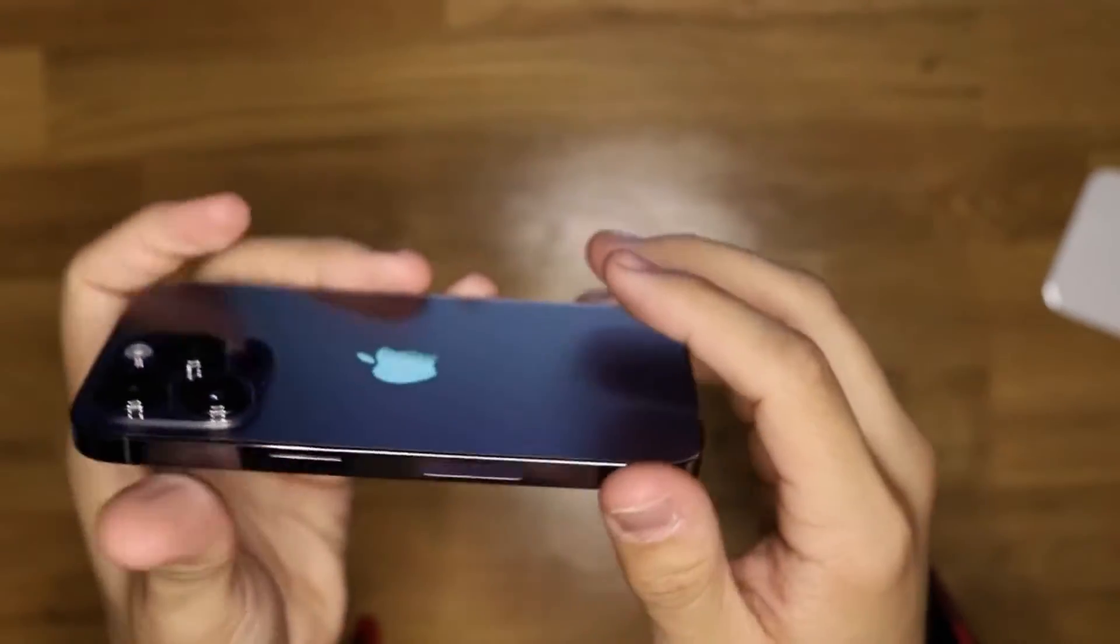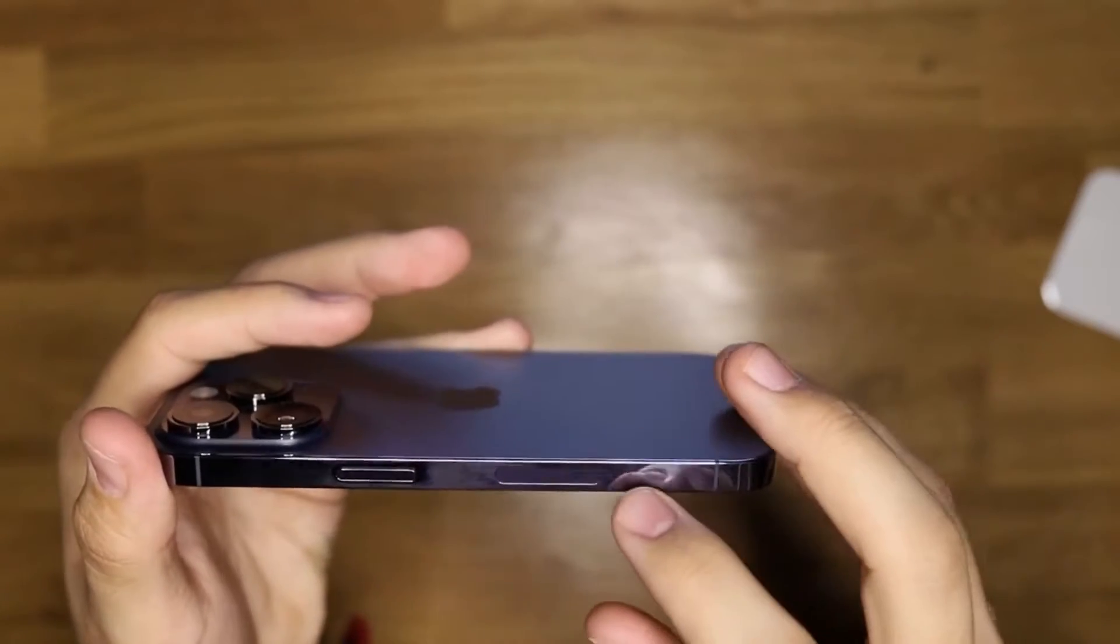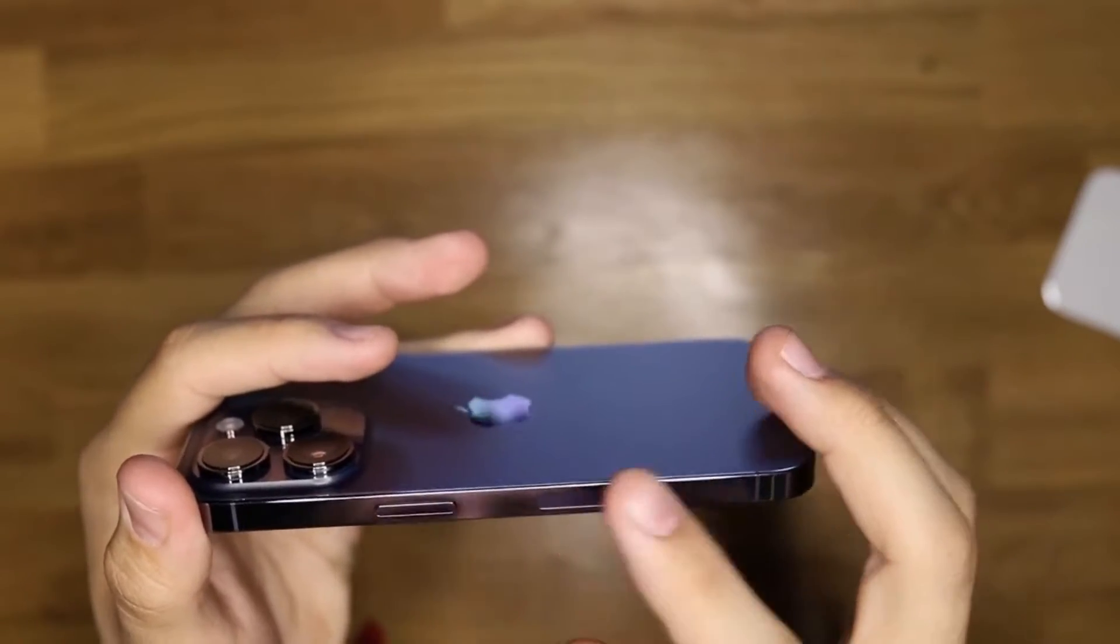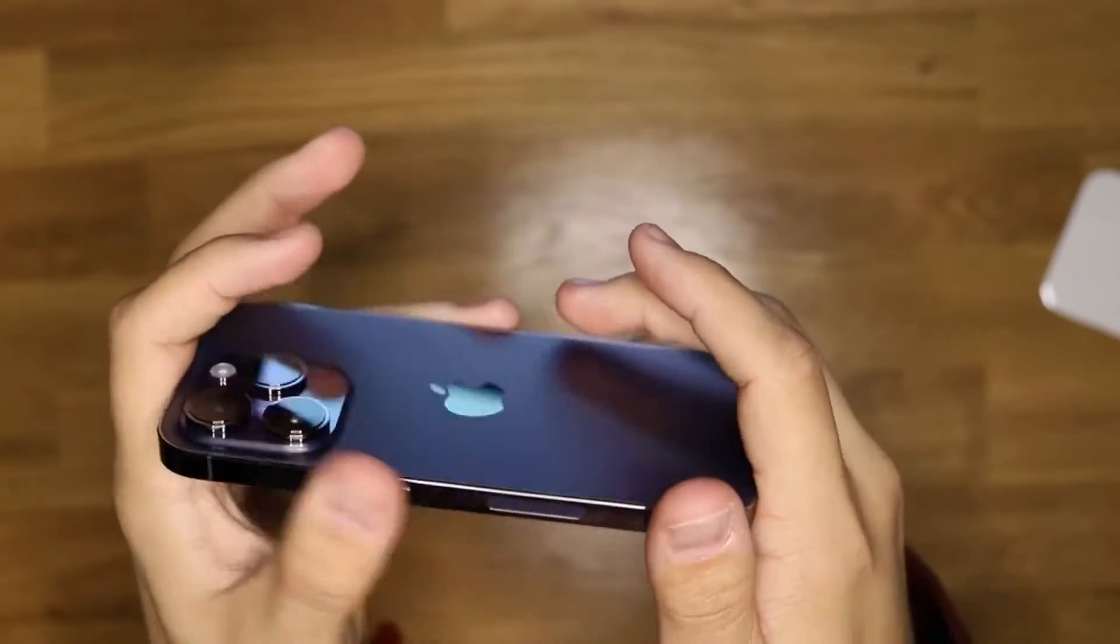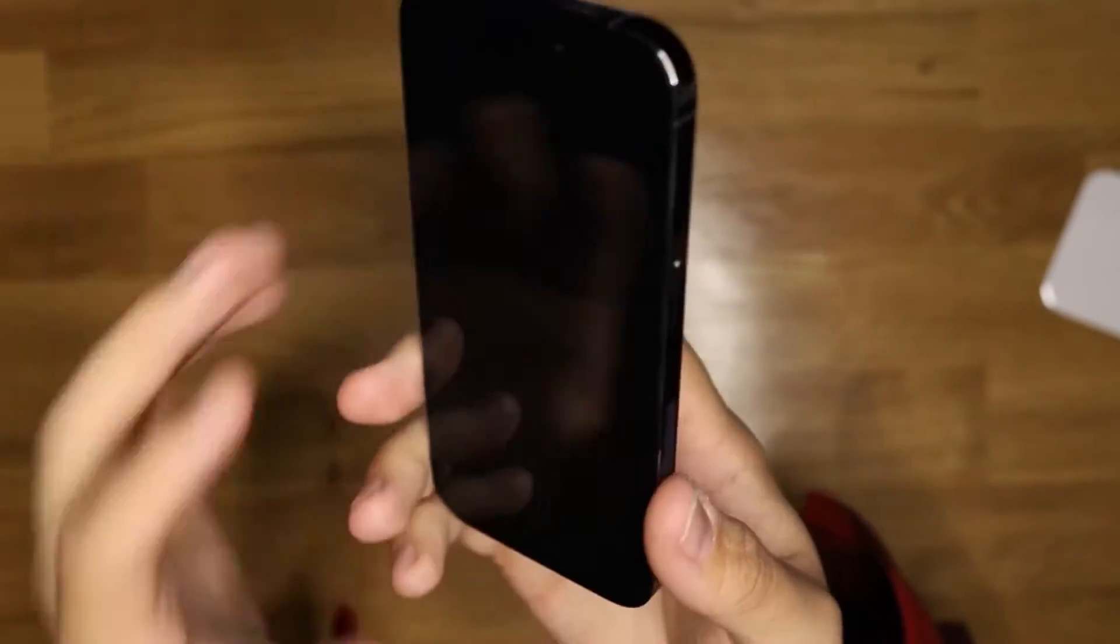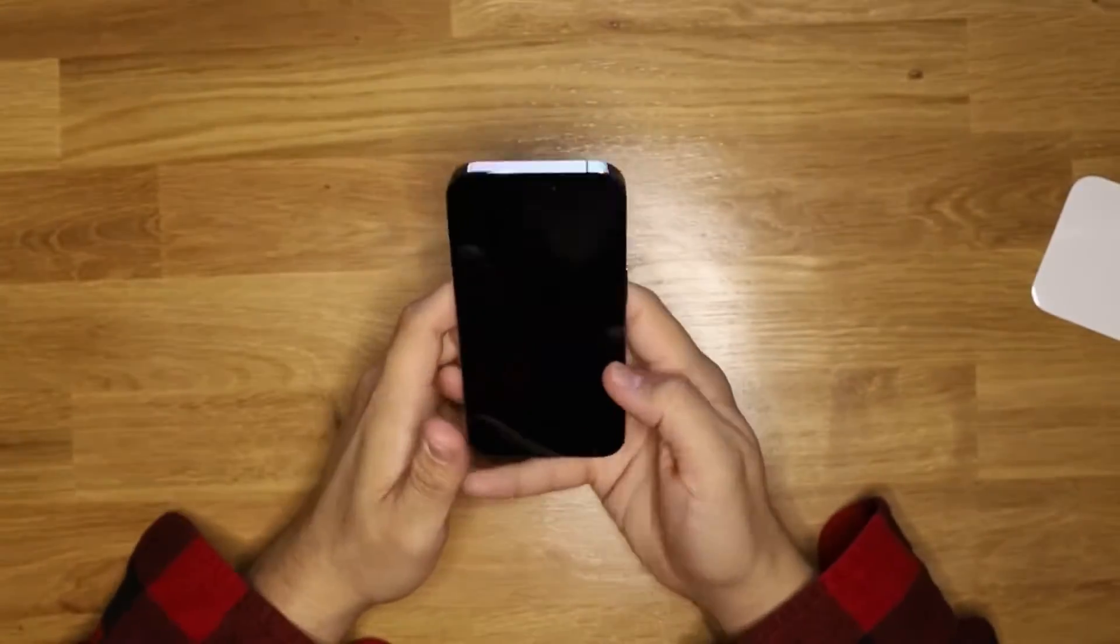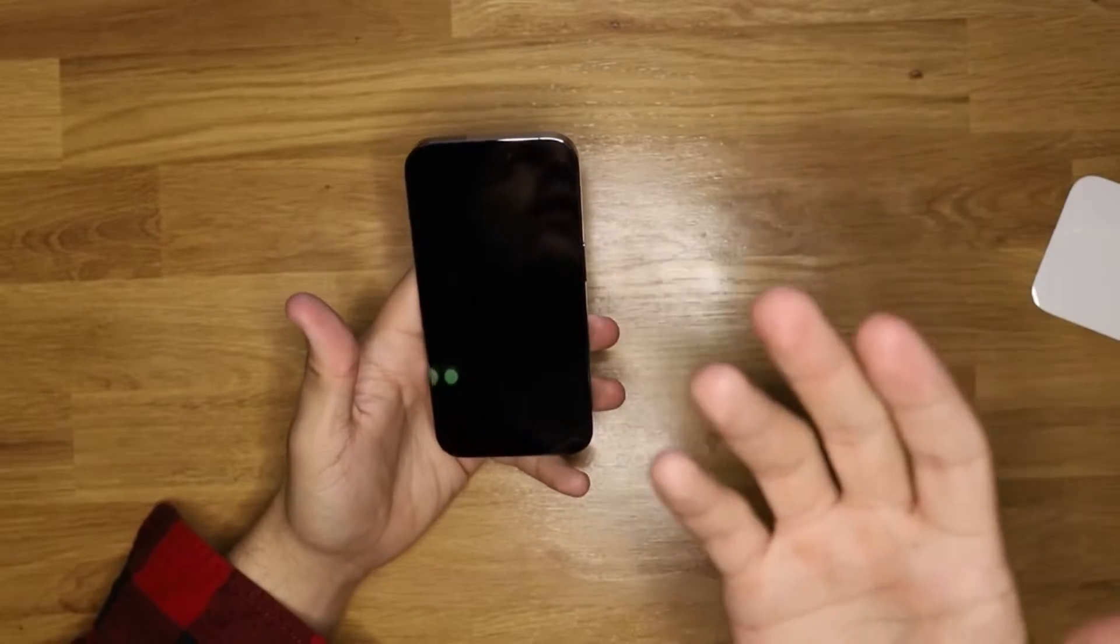And now this year they did end up getting rid of the SIM tray, so you're not gonna have to worry about any water getting there. I don't like it as much only because if you do have another phone and you want to inject another SIM into it, you have to get with your carrier and figure that out just so you can travel and whatnot.